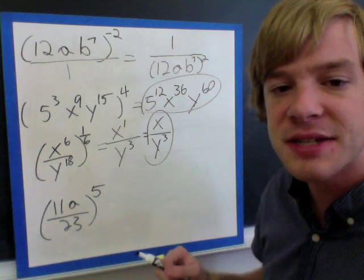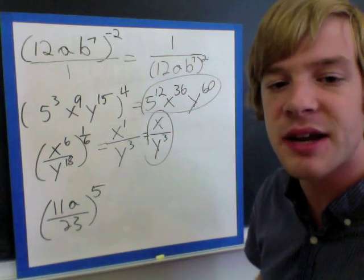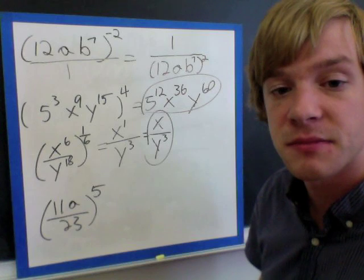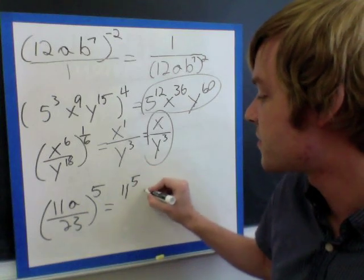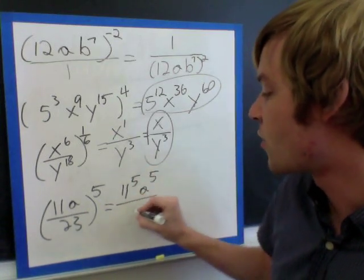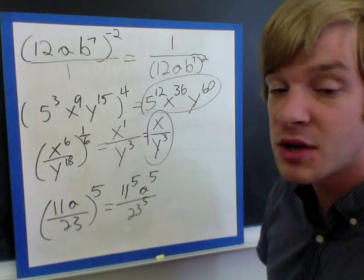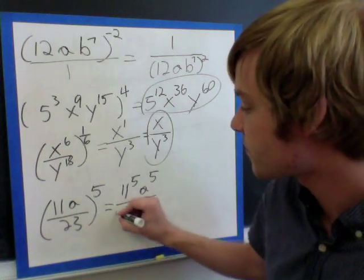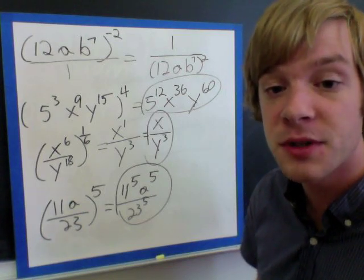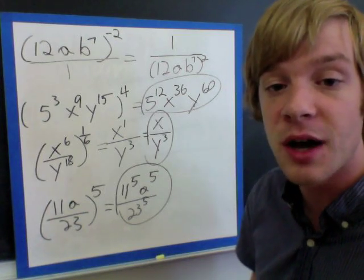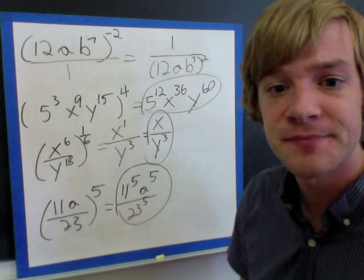The last example is just raising each of the pieces inside the parentheses to the power on the outside — very simple. I'll have 11 to the 5th and a to the 5th over 23 to the 5th power. There's nothing else I can do to simplify this, so that is our answer. I hope these have been helpful and that you feel like you've learned something. We will be doing more examples of these problems together in class, so be ready for tomorrow.